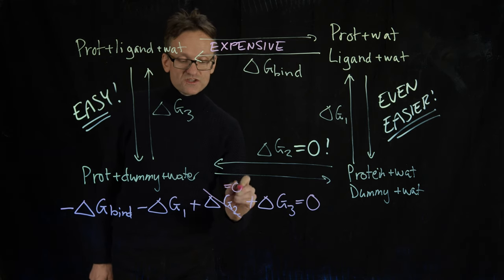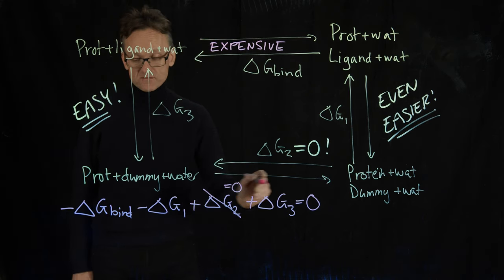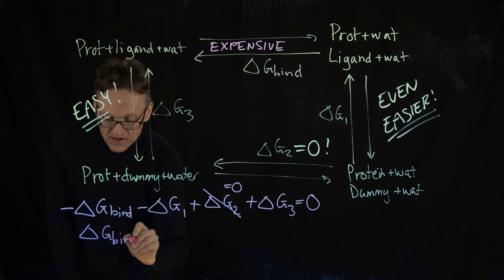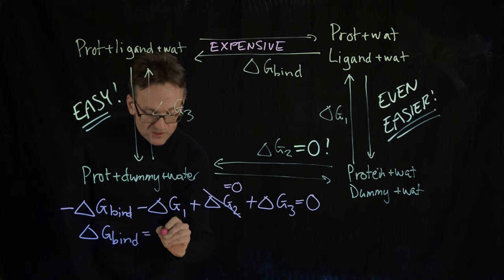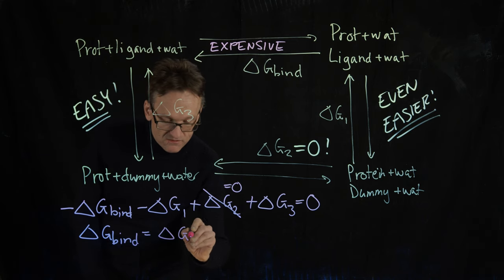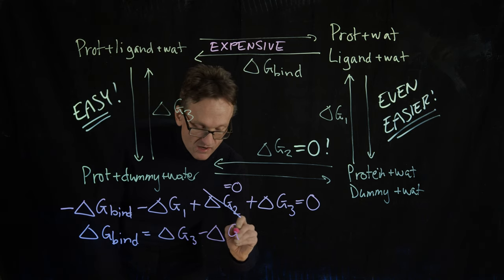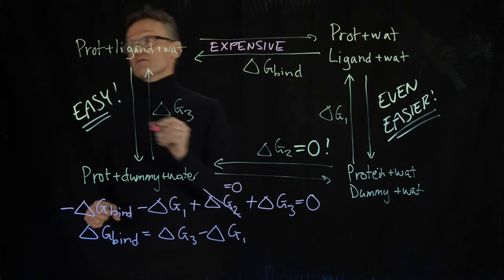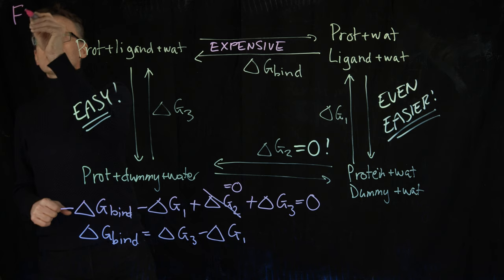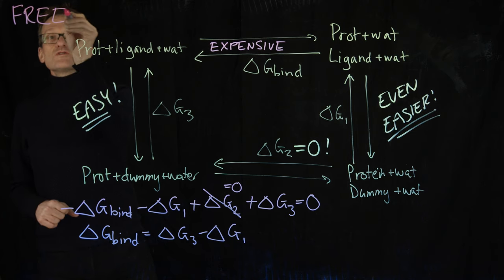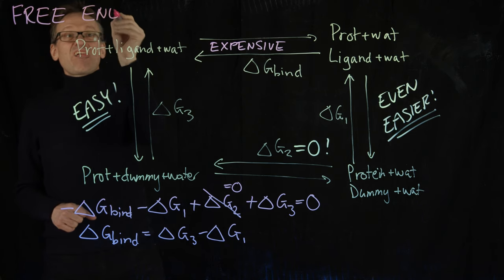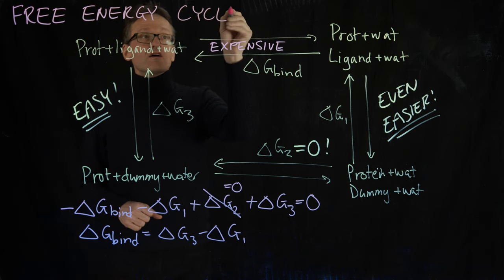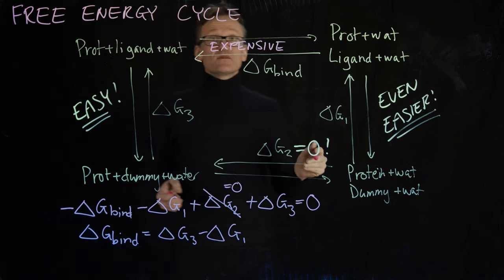Delta G2 was zero, so I can strike that one out. And then I solve for delta G bind, putting that on the other side. And that means that delta G bind here is just the difference between two free energies. So it's delta G3 minus delta G1. This is a so-called free energy cycle. And you should know this concept. Occasionally we call them a thermodynamic cycle too.